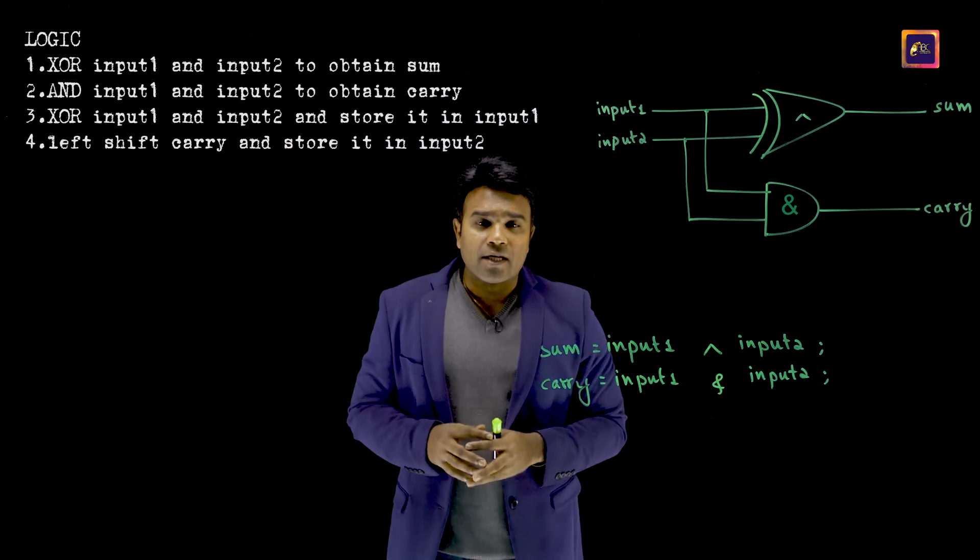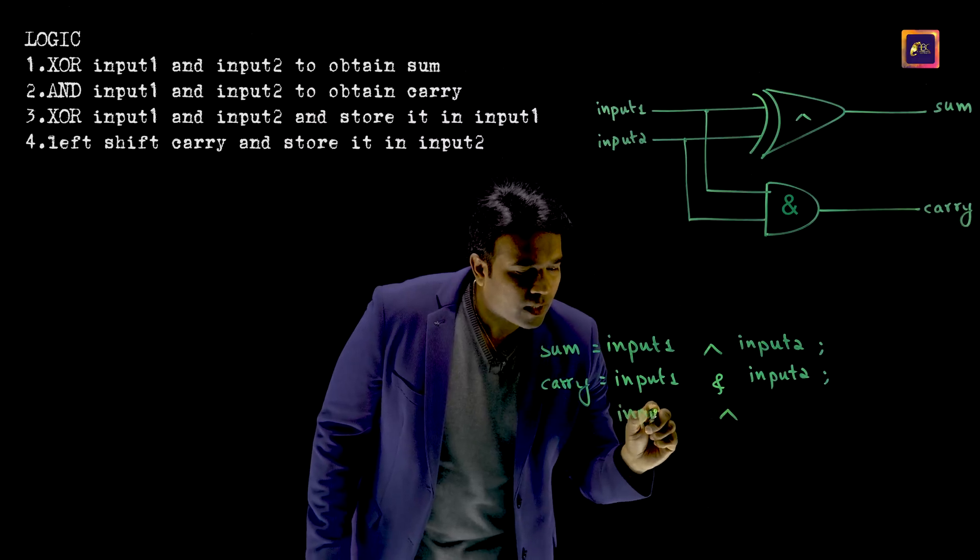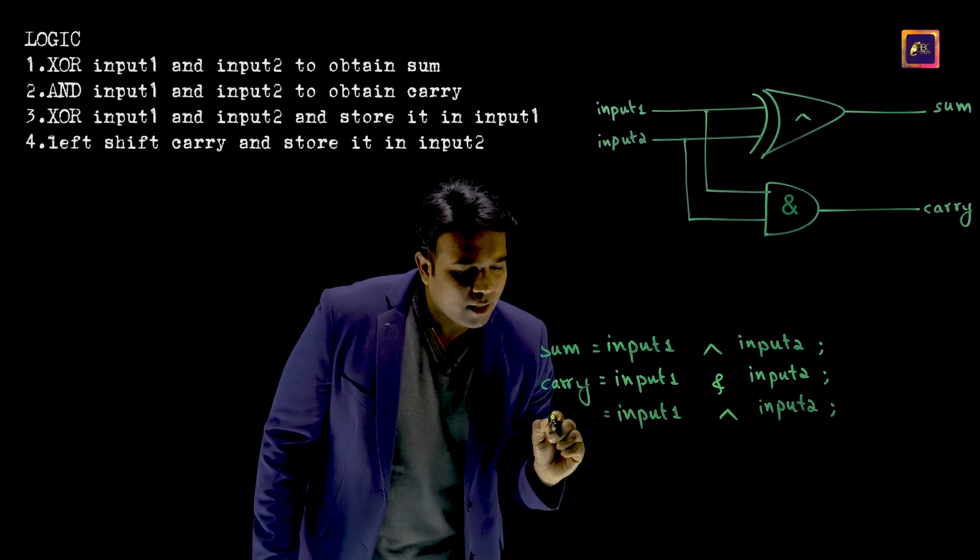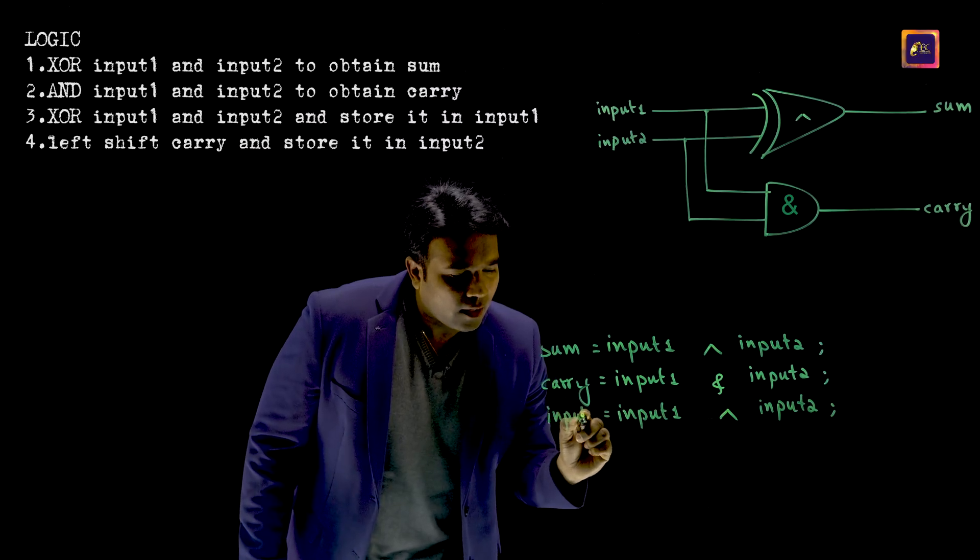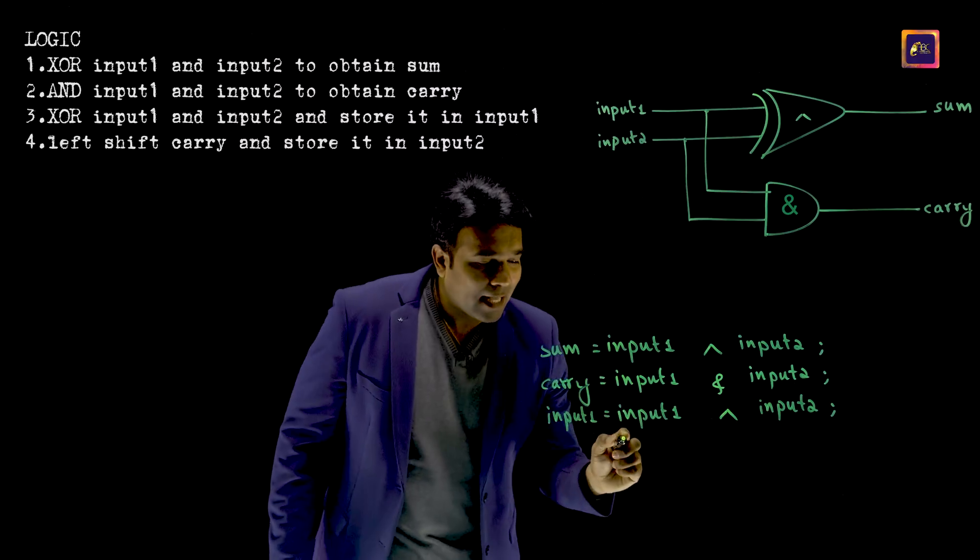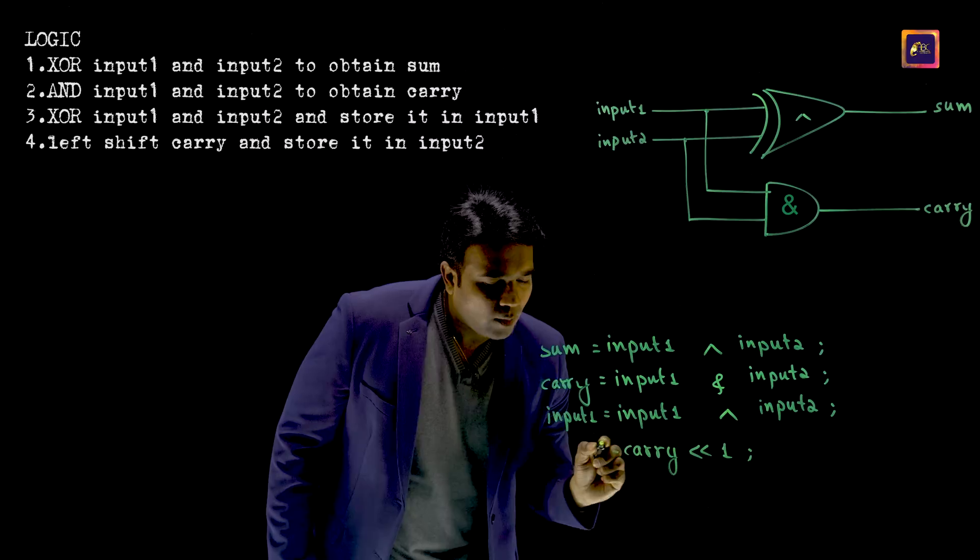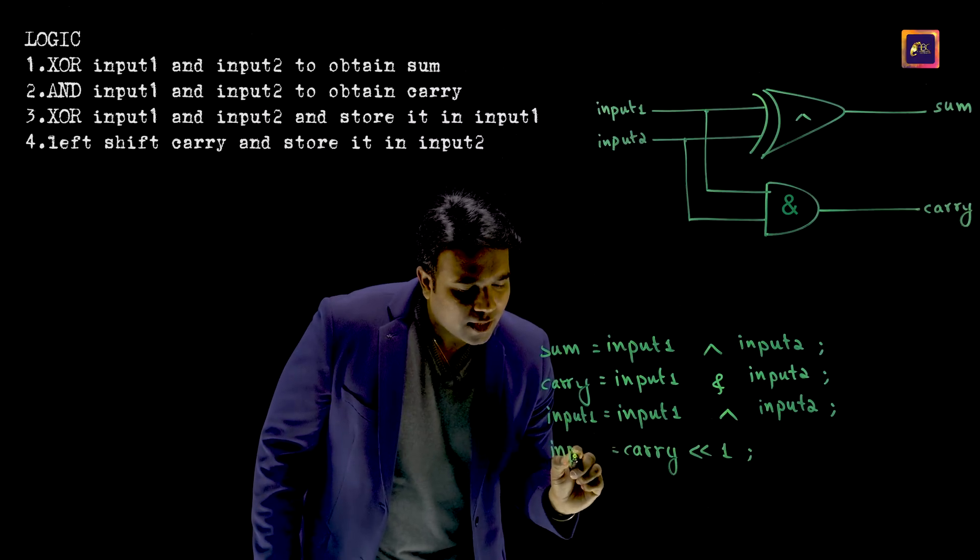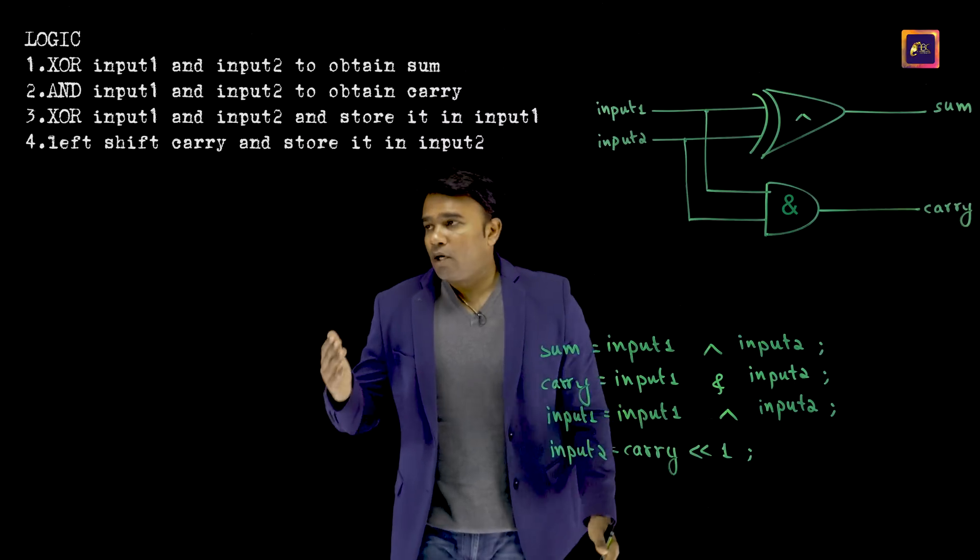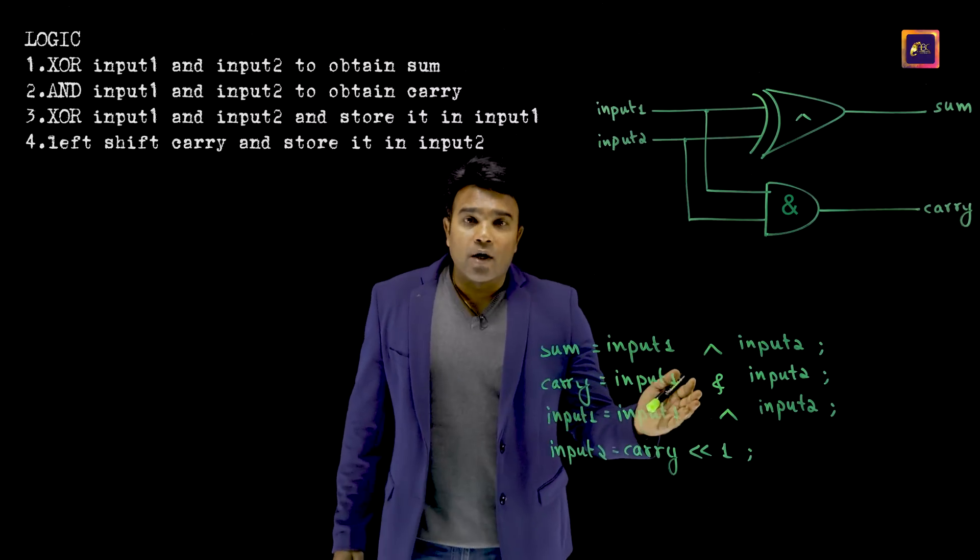So I apply the third step wherein it tells that I am again supposed to XOR input 1 and input 2 and temporarily keep it in input 1. And not just that, I will also have to shift my carry and that is the next step that I would left shift the carry by one position and I am going to consider that as my input 2. I have converted whatever is being told in this logic into a programming code.